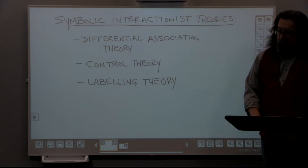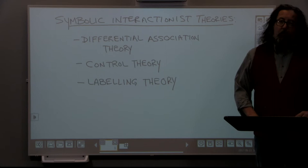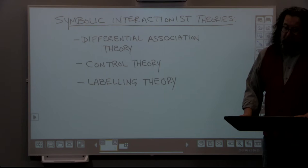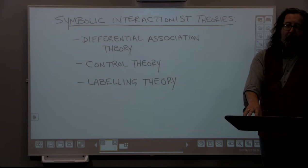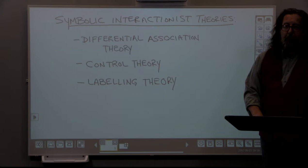The very first one we're going to look at is differential association theory. Basically, the idea is that we learn our attitudes about deviant behavior from the various groups that we associate with in society. Individuals' attitudes about what is or is not considered deviant, and whether they're going to engage in deviant behavior, are primarily influenced by the types of groups they join. In our last module, we talked about the importance of primary and secondary groups in influencing our behavior, and differential association theory applies that to our attitudes about what's deviant.